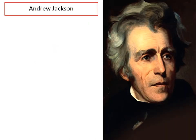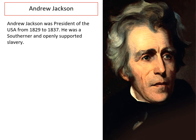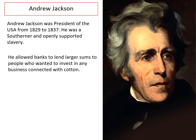The last reason why opposition doesn't succeed in this period is because of President Andrew Jackson. Jackson is President of the US from 1829 to 1837. He's a Southerner and he openly supports slavery. Because he openly supports slavery, he allows banks to lend larger sums to people who want to invest in any business connected with cotton. If you're trying to oppose something and you get the president of a country supporting it, that's not going to work.